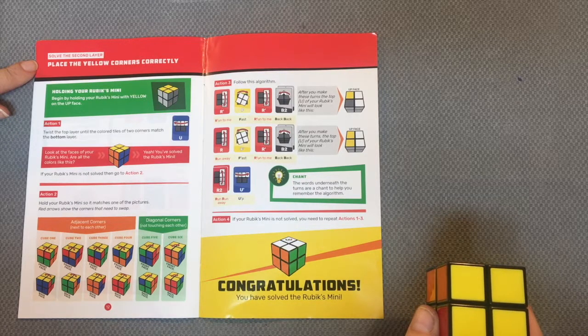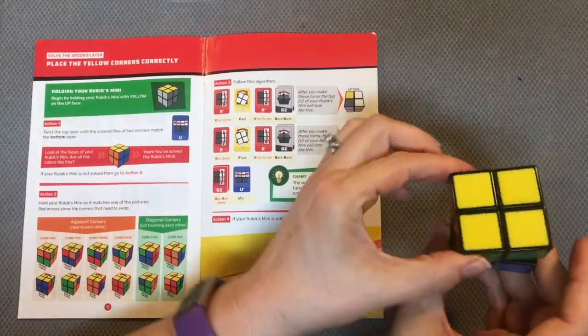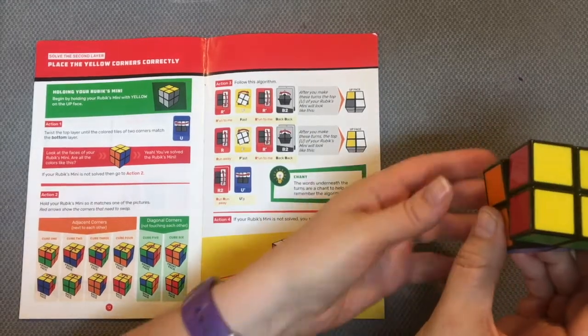The next section tells me to place my yellow corners correctly. Action one is to twist the top layer until two corners match the bottom layer.